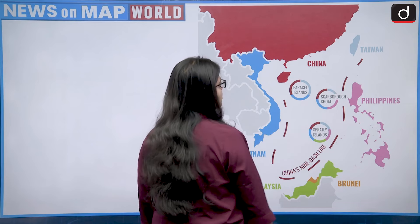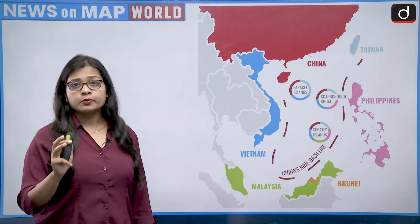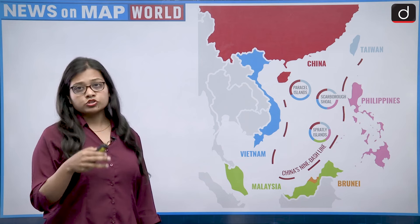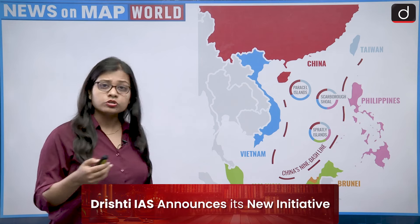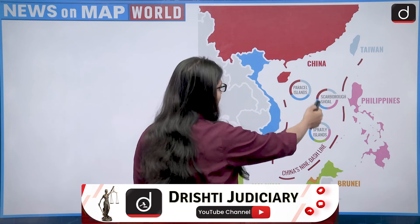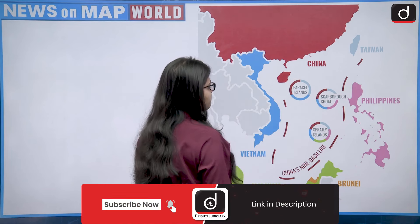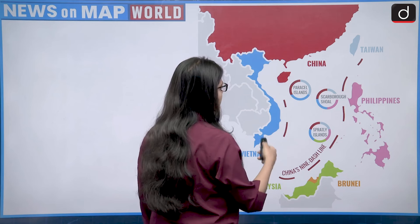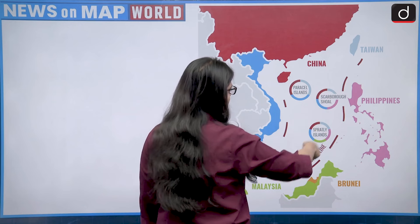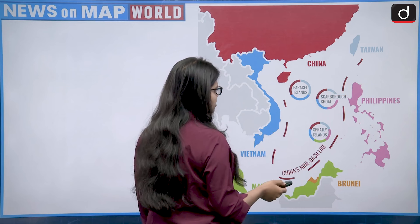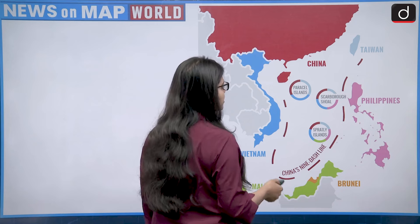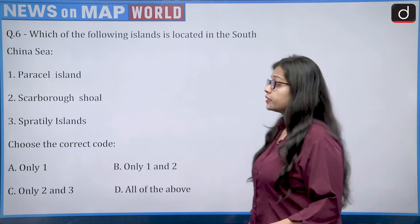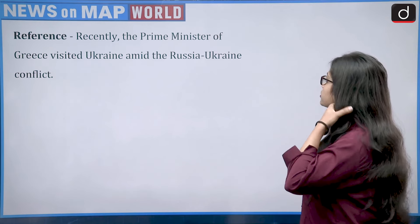The islands of the South China Sea are disputed, with many countries claiming them — including under China's nine-dash line policy. Paracel Islands are claimed by China, Vietnam, and Taiwan; Scarborough Shoal by China, Taiwan, and the Philippines; and Spratly Islands by China, Vietnam, Brunei, the Philippines, and Taiwan. All three island groups are in the South China Sea, so the correct answer is Option D — all of the above.